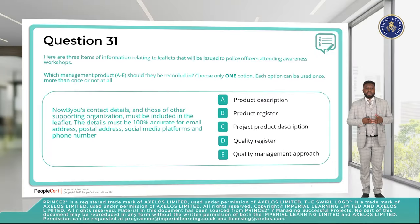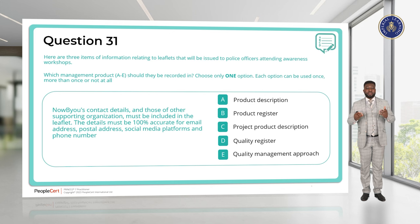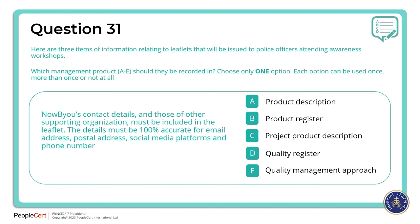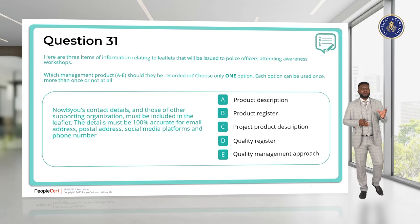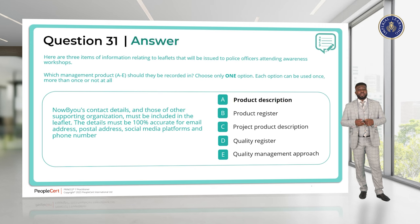Question 31. Now Be You contact details and those of other supporting organisations must be included in the leaflet. The details must be 100% accurate for email address, postal address, social media platforms and phone number. This sounds like something the product must comply with in order to be acceptable — quality criteria that must be met. This information will be found in the product description, which consists of quality specification and tolerances. The answer is A, product description.